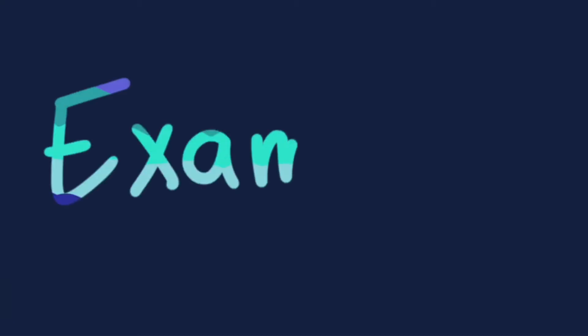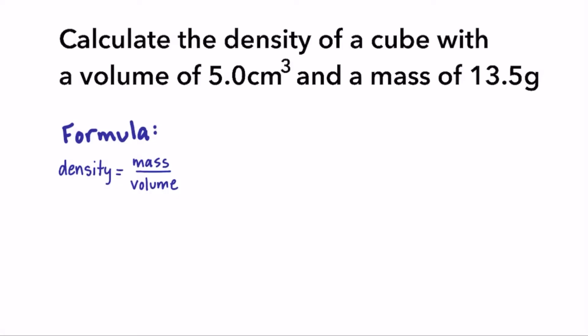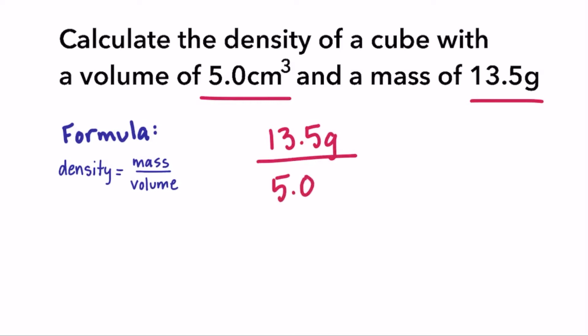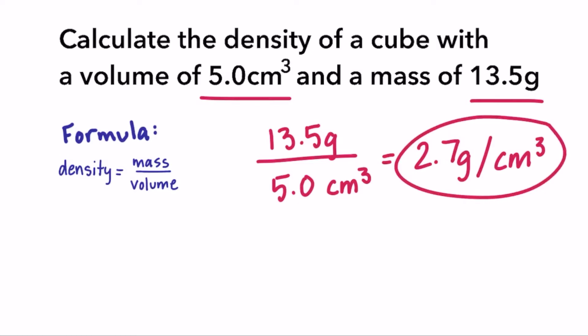Let's do a couple of practice problems using the density formula. Calculate the density of a cube with a volume of five cubic centimeters and a mass of 13.5 grams. Using the formula mass over volume, we take 13.5 grams and divide it by five cubic centimeters. This equals 2.7 grams per cubic centimeter. When units are different in the numerator and denominator, they don't cancel out, so that's why density has two units — it carries the unit for mass and volume.